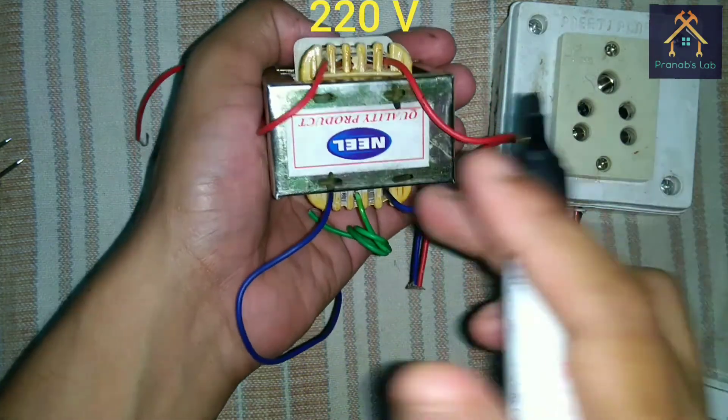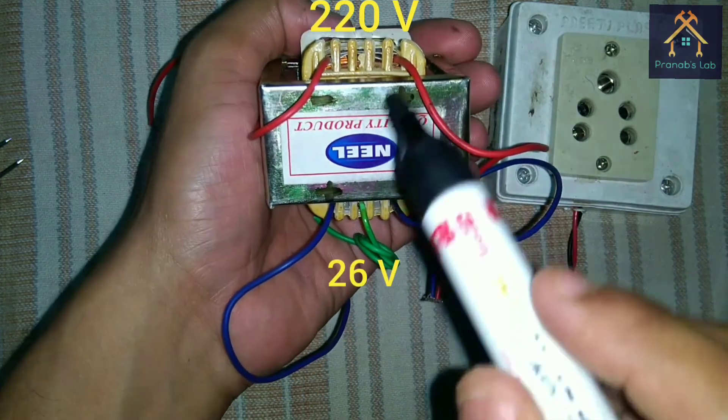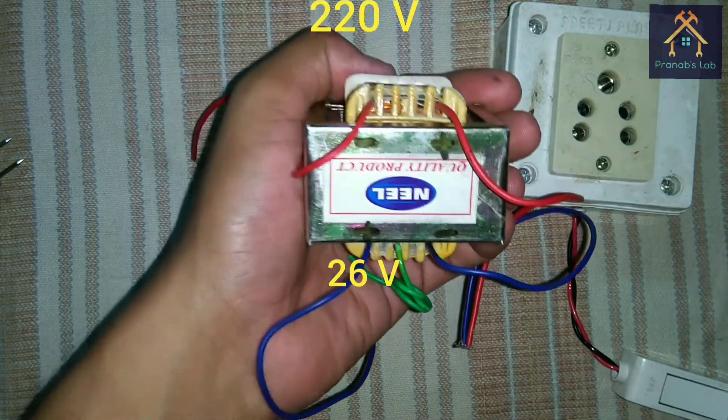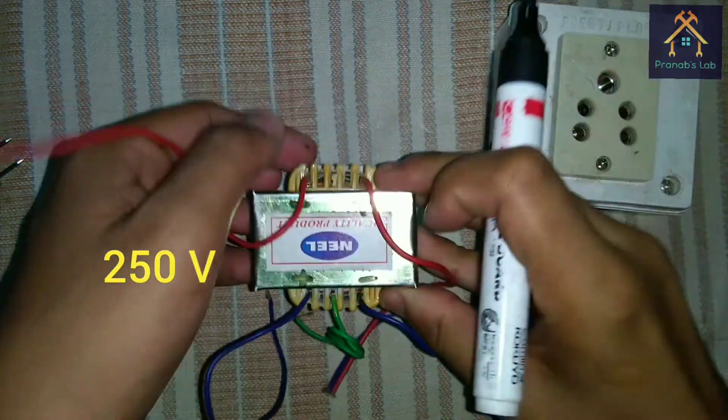Across the red wires, voltage is 220V. And across the two blue wires, voltage is 26V. And the resultant voltage between red and blue wire is 250V.